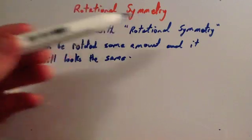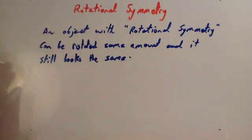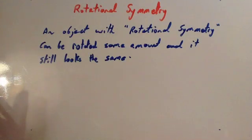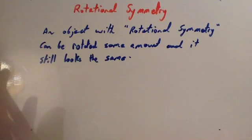We're now going to look at rotational symmetry. If an object has got rotational symmetry, it can be rotated some amount and it will look the same. Let's look at some examples.